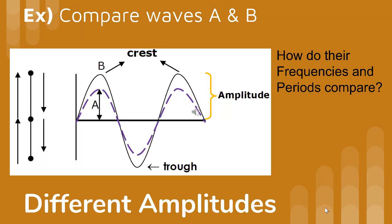These two waves have different amplitudes, but how do their frequencies and their periods compare? These two waves have the same frequency and period because frequency is the number of cycles per second and period is the time for a wave to pass by a point. These waves both have the same wavelength, so they have the same frequency and period.